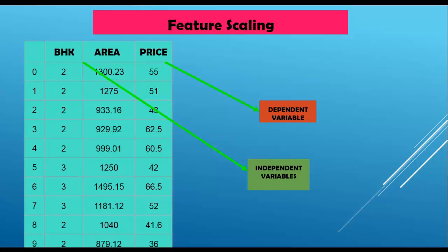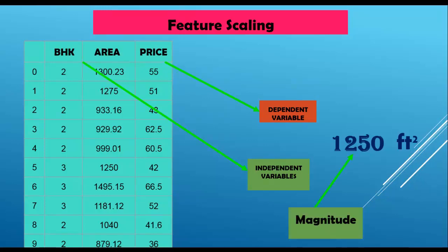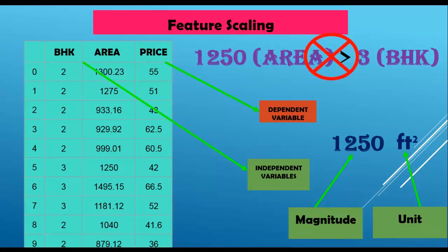So why do we need feature scaling? Looking at our dataset, consider the area column — a value like 1250 has the unit square feet. BHK can be 2 or 3, whereas area is in square feet. This comparison is invalid because both have different units. Some machine learning algorithms cannot understand this difference, so we have to use feature scaling to put numerical features into the same scale.